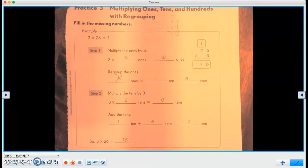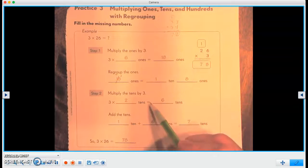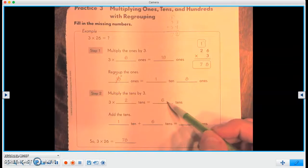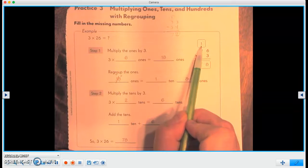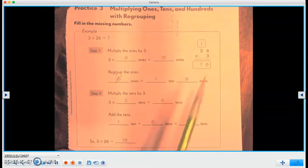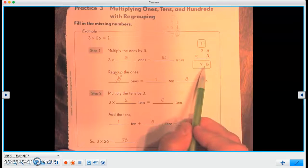Step two, we're going to multiply the tens by three. So there are two tens times three, which equals six tens. And now we're going to add those tens. So we're going to add the one that we had from regrouping with the six from our multiplication, which one plus six equals seven. So our answer is 78.